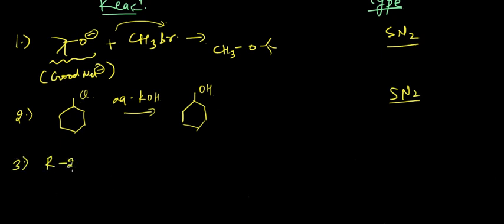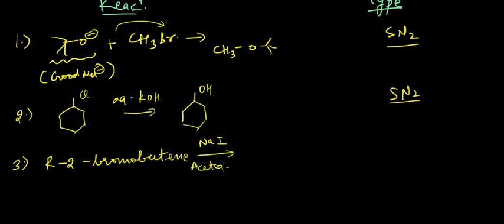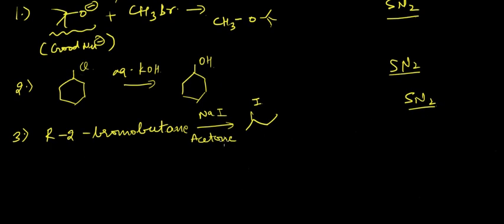Next, we have 2-bromobutane reacting with NaI in acetone. This is again a standard SN2 example because there is no polar protic solvent and substitution is taking place, so SN1 is out of the picture.